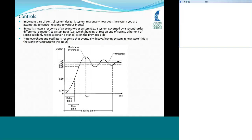The input is a unit step — shifting the support up one foot instantaneously. The response has several characteristics: maximum overshoot, a rise time (when it reaches 90% of the final equilibrium value), and a settling time (when it drops below 5% of the final equilibrium position). Eventually the mass stops vibrating and reaches a new steady state. Everything that happens in between is the transient response — it oscillates for a while and then stops.